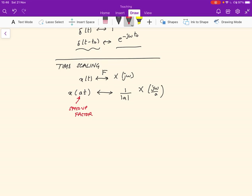And so when you speed it up by a factor of, let's say, five, then in the frequency domain, we're going to have the frequency divided by the factor of one over modulus of A.